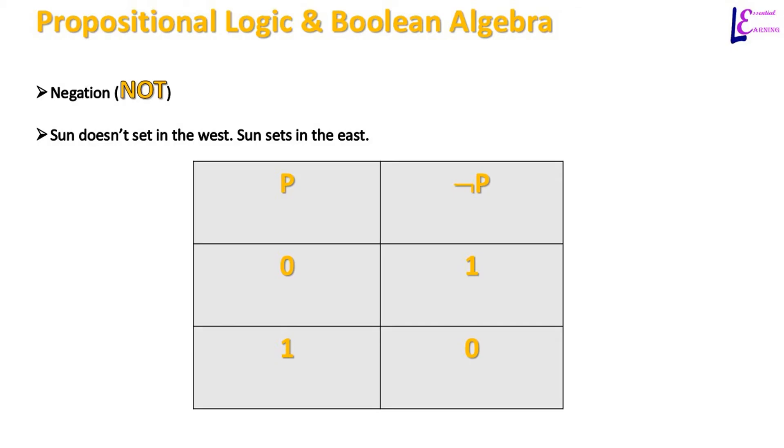Negation in logic is simply a statement that turns a true proposition into false one. Negation or NOT operator applied to the variable changes the value of variable to 1 if it is 0 and 0 if it is 1.